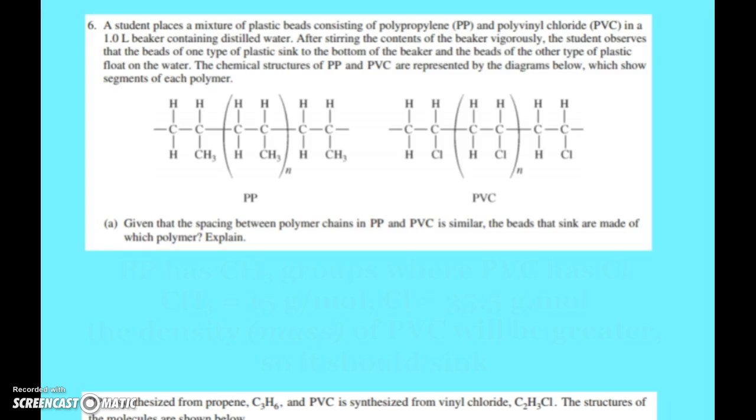And so you see these structures, and the thing that should pop out to you is that for the polypropylene, we have all these CH3s. Whereas for the PVC, we have chlorines in the same place. And if you look at the mass, the molar mass, CH3, 12 plus 3, that's 15, and chlorine is 35.5.